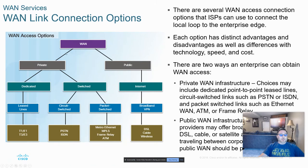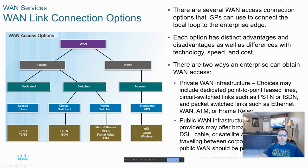Selecting a WAN technology: there's a chart that breaks out the traditional categories. On the private side, dedicated leased lines and T-carriers. On the circuit-switched side: public switched telephone network and ISDN — kind of a precursor to DSL. On the packet-switched side: Metro Ethernet, MPLS, Frame Relay, Asynchronous Transfer Mode, and you could also add software-defined networking to that. On the public side, we have VPNs using broadband, which would consist of DSL, cable, or wireless.